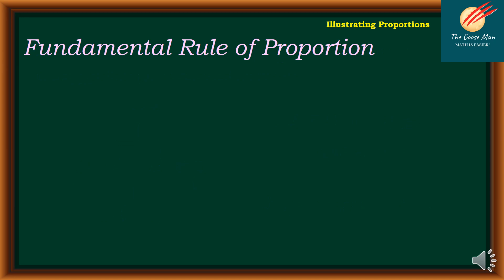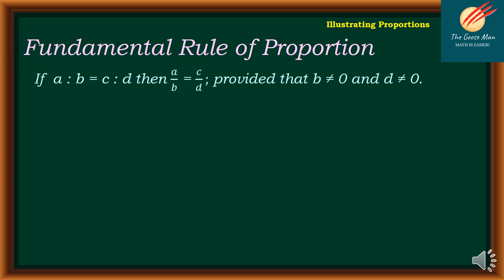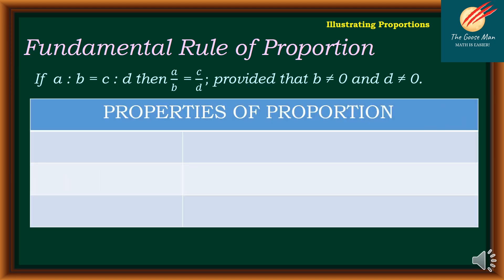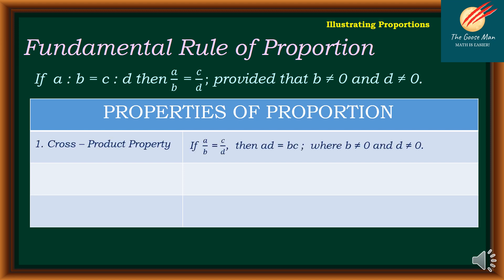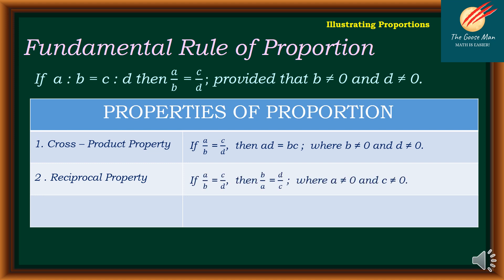Since we've been able to illustrate proportion, let's move on to the fundamental rule of proportion. If A is to B is equal to C is to D, then A over B is equal to C over D, provided B is not equal to 0 and D is not equal to 0. The first property is the cross-product property: if A over B is equal to C over D, then A times D is equal to B times C. The second property is the reciprocal property: if A over B is equal to C over D, then B over A is equal to D over C, where A is not equal to 0 and C is not equal to 0.